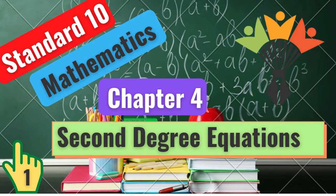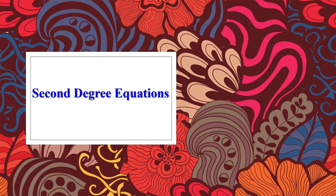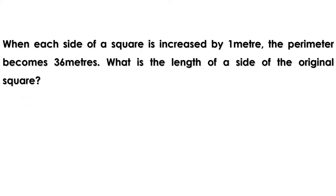Welcome to Maths Companion. In 8th standard we learn equations; in 9th standard we also learn equations or pairs of equations. Today we are going to learn a particular type of equations called second degree equations. Let us start with a problem: when each side of a square is increased by one meter, the perimeter becomes 36 meters.